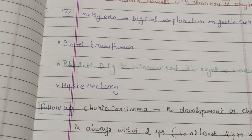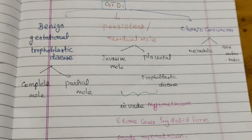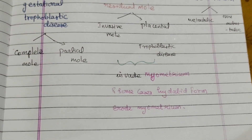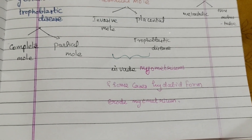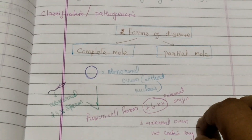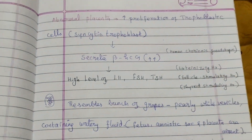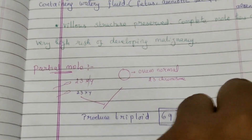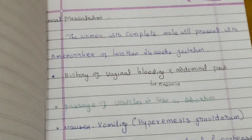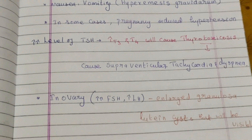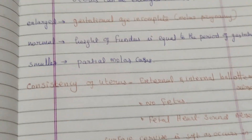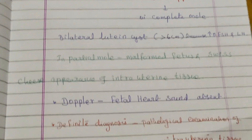To summarize, molar pregnancy includes complete mole, residual mole, and choriocarcinoma. The invasive type invades the myometrium. Topics covered include risk factors, classification — complete and partial mole — clinical presentation, physical examination, diagnosis, and treatment.